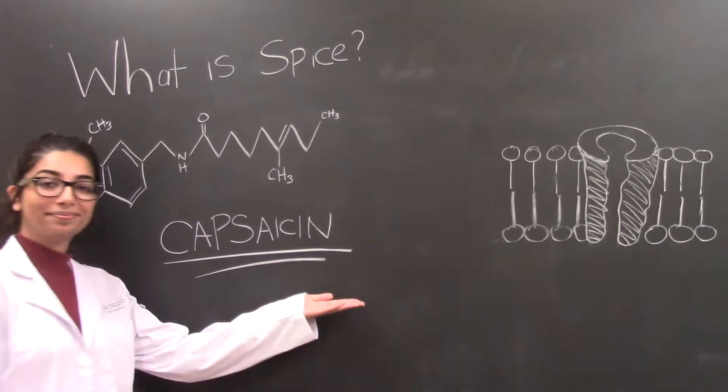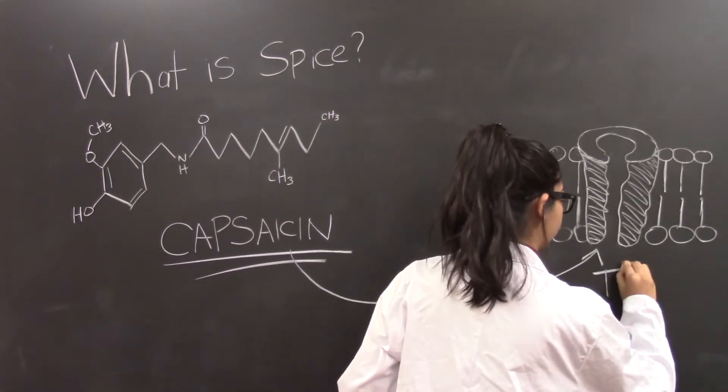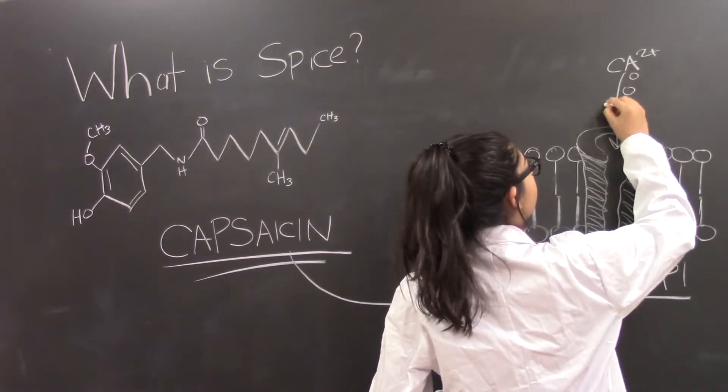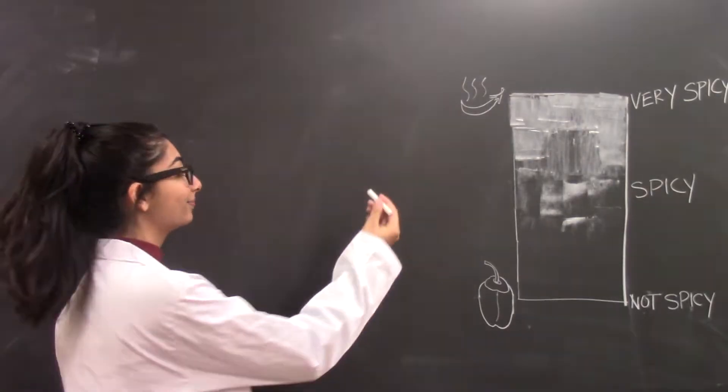Capsaicin is a molecule found in all spicy foods. It attaches itself to certain pain receptors in your mouth, such as TRPV1, and it dictates how hot your food is. The receptors tell your brain that your mouth is burning.